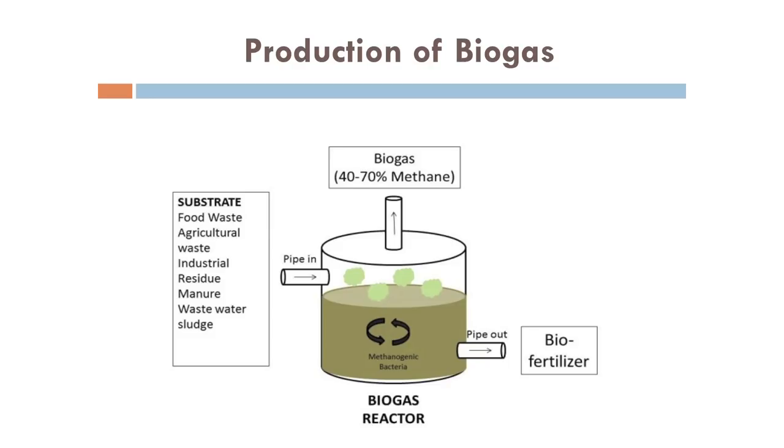The methanogenic bacteria respires anaerobically. The slurry is fed into a fermenter and the methanogenic bacteria present in the cow dung multiplies, and during that process it carries out fermentation, releasing methane gas. Whatever slurry is left over is called the spent slurry. Biogas can be utilized for cooking or lighting purposes whereas the spent slurry can be utilized as manure. It is advantageous to people living in rural areas as they can use the biogas plus the spent slurry as manure, and it is cheaper than LPG.